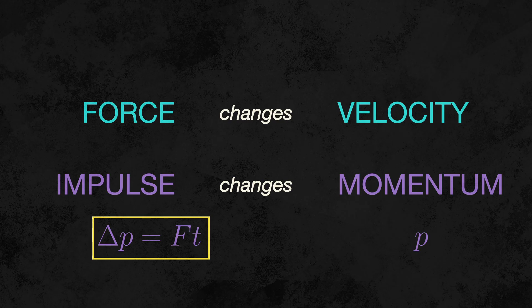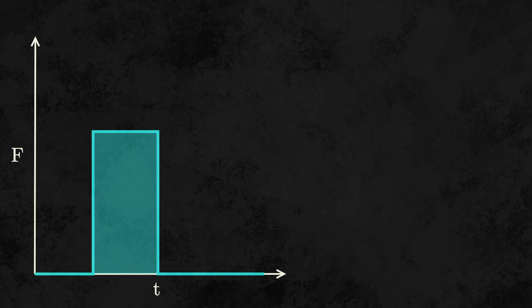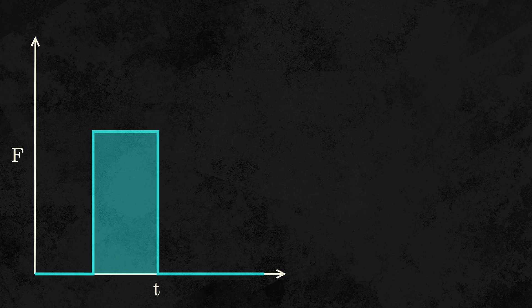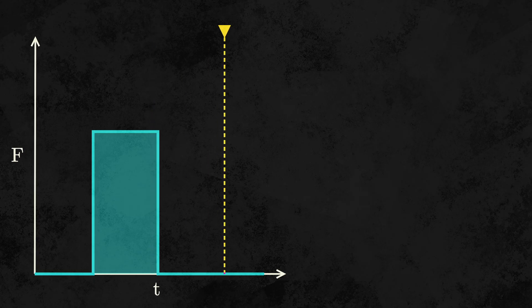But this begs the question, if we already have force, why do we need impulse? Well, in the same way that momentum is an amount of movement, an impulse is an amount of force. Force, by itself, is an instant thing. It's used to measure what's happening to an object at a discrete, singular point in time. But in the real world, nothing is exerted instantly. Impulse takes into account the whole time a force was exerted onto an object from start to finish.